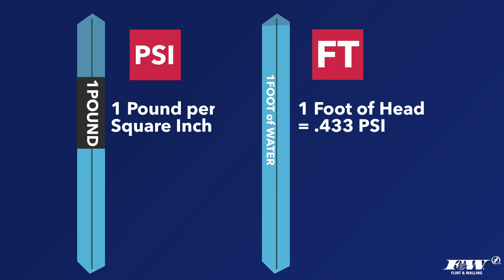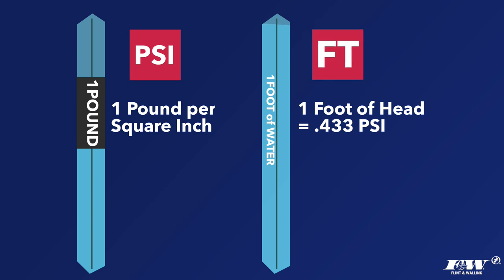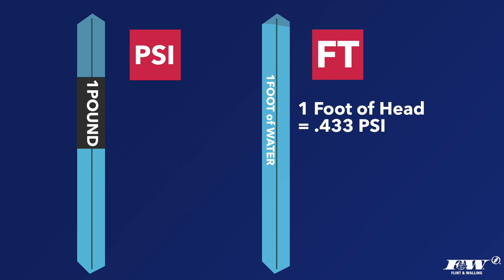We use both units because sometimes it's easier to calculate in feet of head and sometimes in PSI. We can convert between them based on the weight of water: since a one-foot-tall, one-square-inch column of water weighs 0.433 pounds, one foot of head equals 0.433 PSI. Conversely, dividing one pound by the weight of that column tells us that one PSI equals 2.31 feet of head. The great thing about feet of head is that the vertical distance between two points in the irrigation system in feet equals the pressure difference between those points expressed in feet of head.